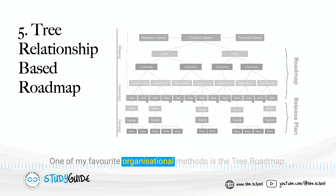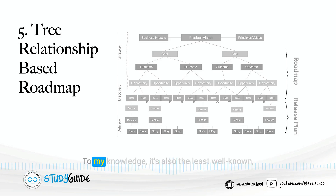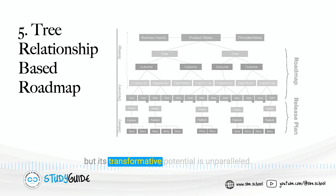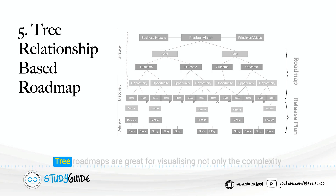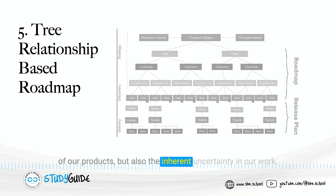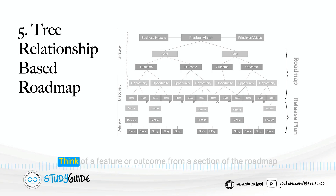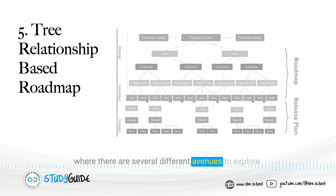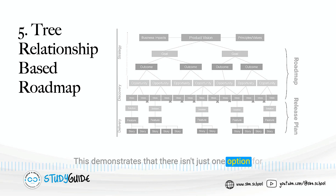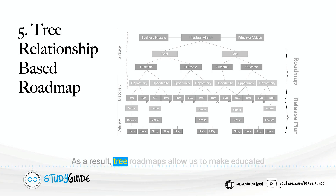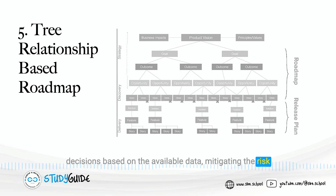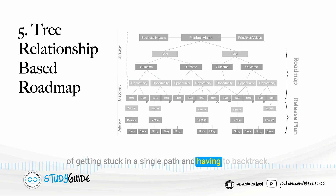One of the favorite organizational methods is the tree roadmap. To my knowledge, it's also the least well-known, but its transformative potential is unparalleled. Tree roadmaps are great for visualizing not only the complexity of our products, but also the inherent uncertainty in our work. Think of a feature or outcome from a section of the roadmap where there are several different avenues to explore. This demonstrates that there isn't just one option for accomplishing anything — there are usually several. As a result, tree roadmaps allow us to make educated decisions based on the available data, mitigating the risk of getting stuck in a single path and having to backtrack.